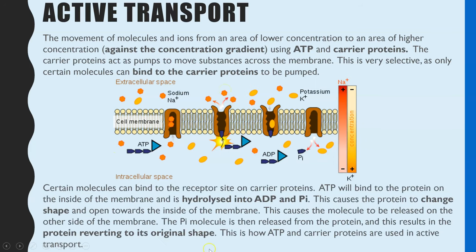Certain molecules bind to the receptor site on carrier proteins. ATP then binds to the protein on the inside of the membrane and is hydrolyzed into ADP and Pi. When it is hydrolyzed, a small amount of energy is released which is used to change the shape of the protein so it opens on the other side and releases the molecules. The Pi — inorganic phosphate — is then released from the carrier protein, causing the protein to revert back to its original shape. This process can continue as long as there is a supply of ATP available.